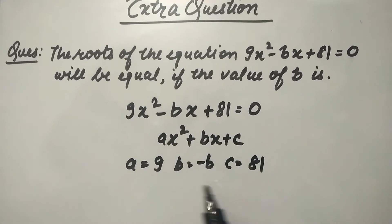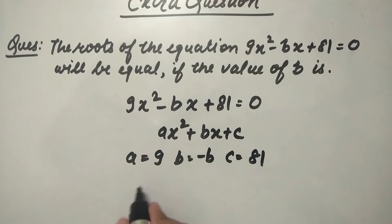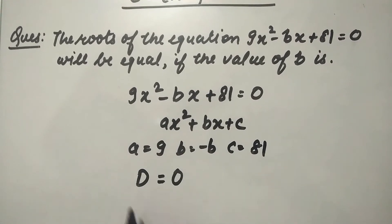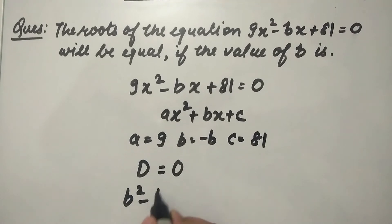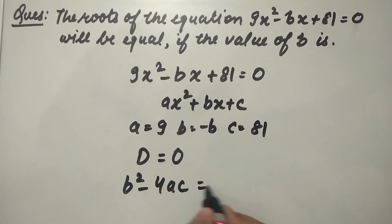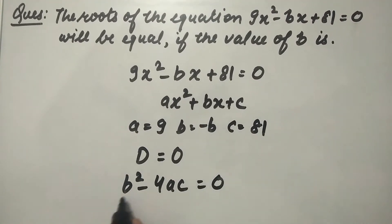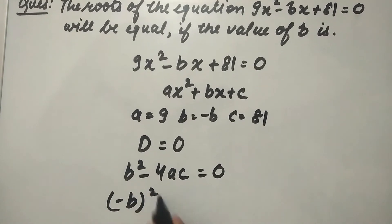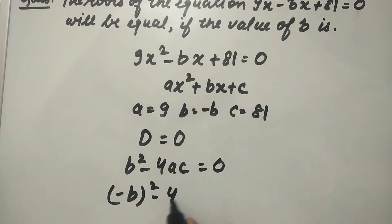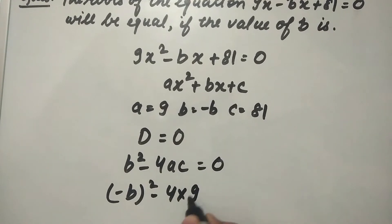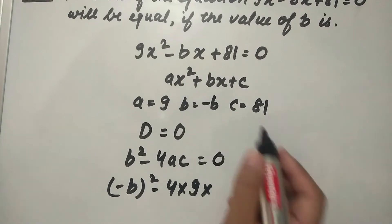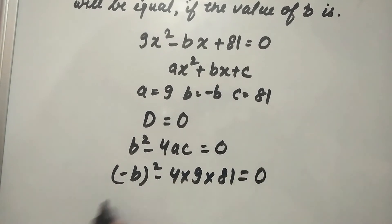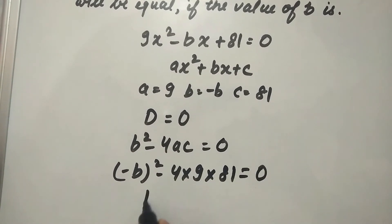If the roots are equal, then the value of the discriminant is equal to 0. The discriminant is b² - 4ac = 0. We put: (-b)² - 4 × 9 × 81 = 0. (-b)² gives us b².